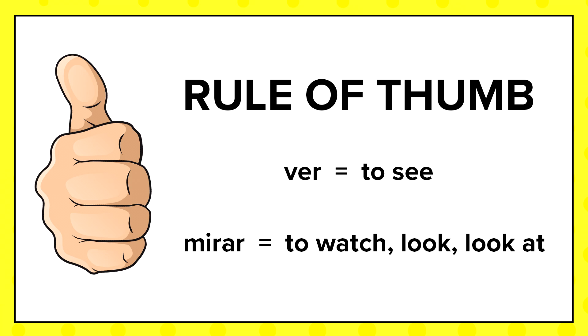The point of this video wasn't to go into all the different uses and translations of ver and mirar. The point was to show you that most of the time they say ver when we say 'to see,' and most of the time they say mirar when we say 'to watch,' 'to look,' or 'to look at' — but not all the time. That way, when you inevitably see ver translated as 'to watch,' 'to look,' or 'to look at,' or mirar translated as 'to see,' the opposite of what we're taught, you're not confused and don't get stuck.